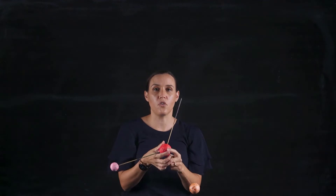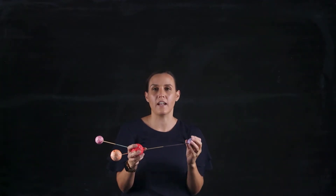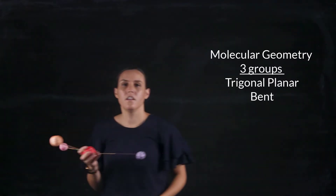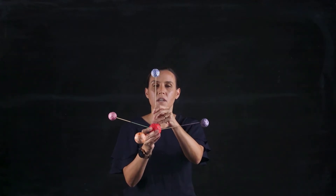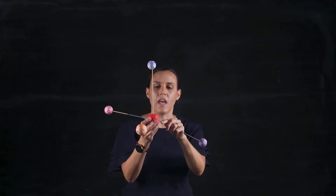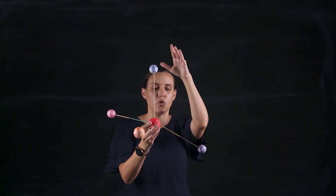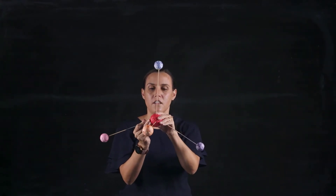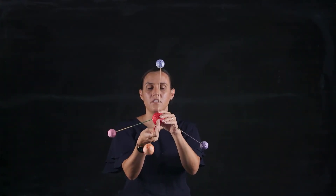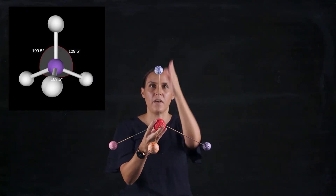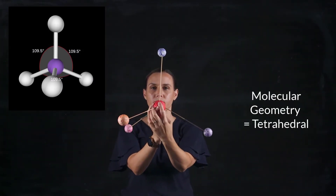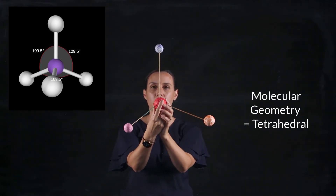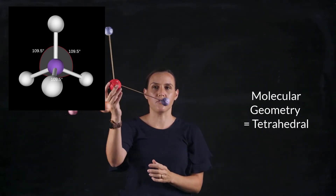Let's move into three atoms on the central atom now. When I bring in my fourth atom, it will come in from either the top or the bottom and then push the other ones down slightly, so they're on a slight angle with that one facing up. This is our tetrahedral conformation — central atom and four bonding atoms, so tetrahedral.